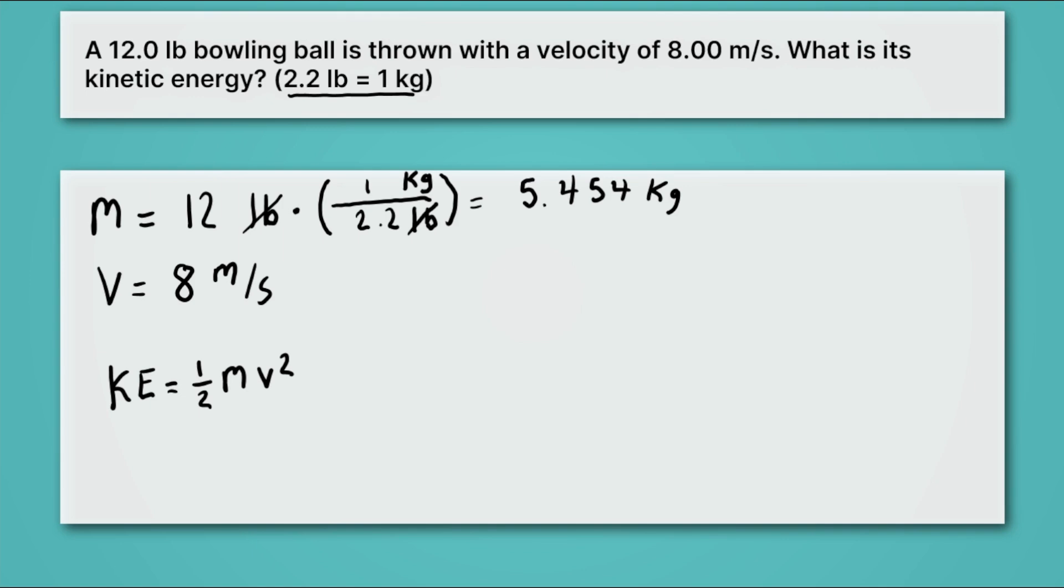Now we're ready to plug that into our kinetic energy equation. So we have one half times our mass, which we know is 5.454. And then we want to multiply that by our velocity, eight, squared. So now, in your calculator, you want to take that 5.454 number that you still have, hopefully sitting there. Multiply it by eight twice, that's how we're going to square it. And then multiply it by one half. When you do that, you should get 174.5.